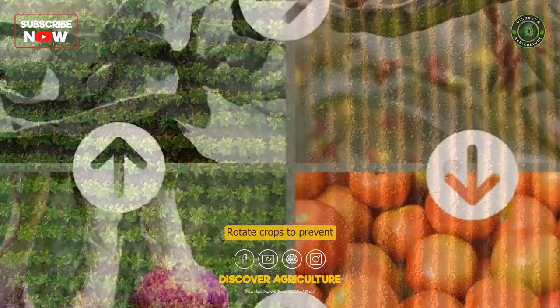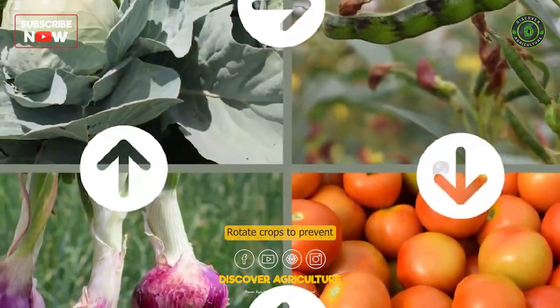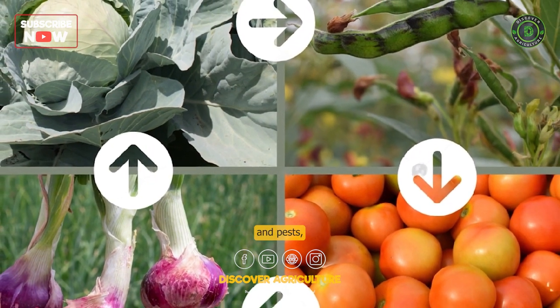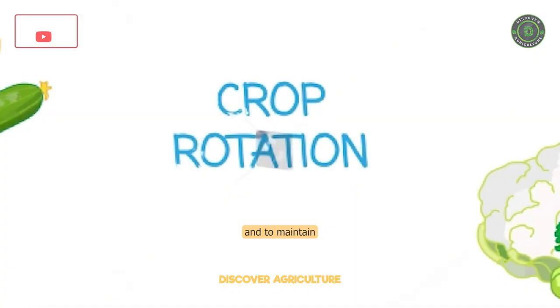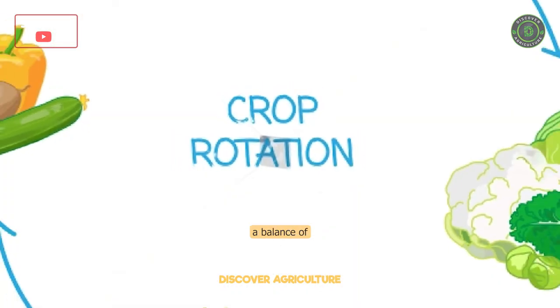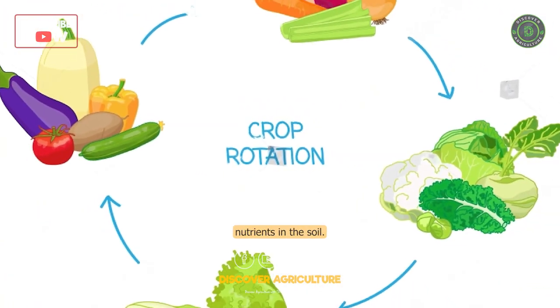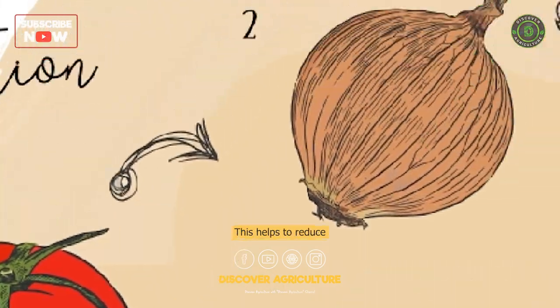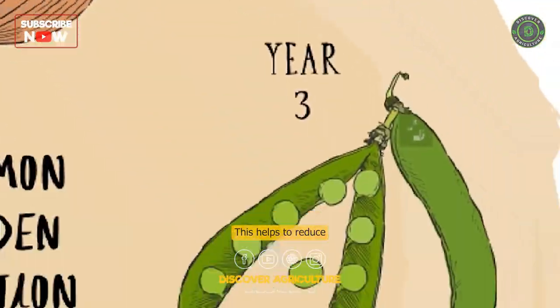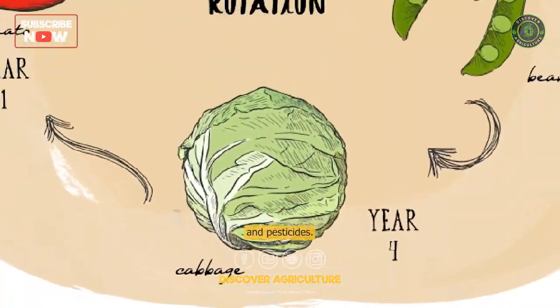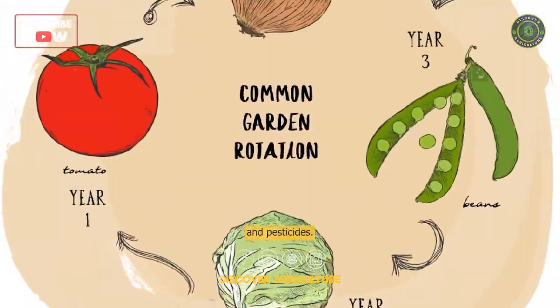Crop rotation: Rotate crops to prevent soil-borne diseases and pests, and to maintain a balance of nutrients in the soil. This helps to reduce the need for fertilizers and pesticides.